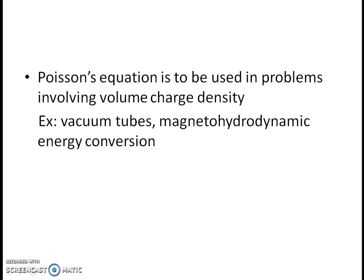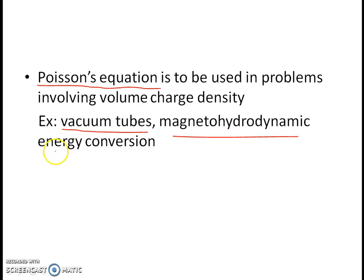When we have volume charge density in the region between the conductors, we have to use Poisson's equation to obtain the solution for potential. We use Laplace's equation when the volume charge density in the region is zero. Examples where volume charge distribution exists include vacuum tubes and magnetohydrodynamic energy conversion devices.